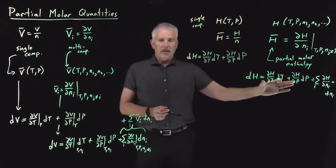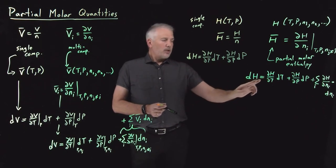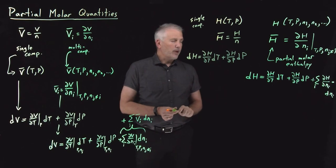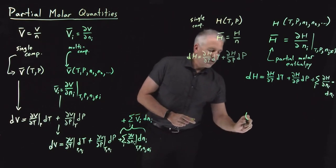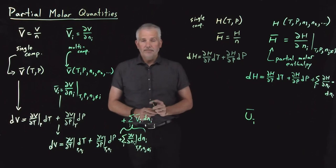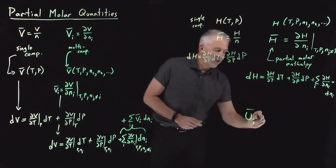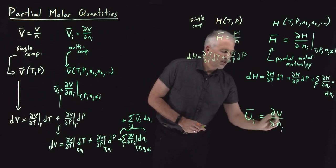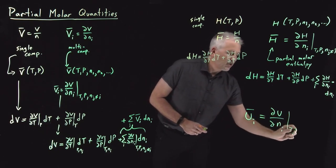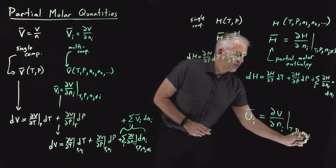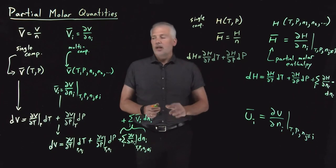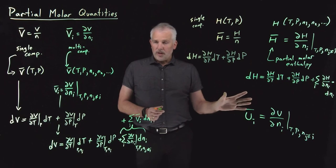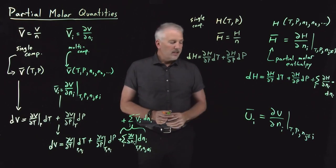We can do this not just for enthalpy, but for any thermodynamic property. Partial molar internal energy, for example — partial molar anything — is equal to the rate of change of that property as I change number of moles while holding temperature, pressure, and other moles constant. So we can define partial molar volume, partial molar enthalpy, partial molar internal energy, or partial molar any property we want, using that same type of expression.